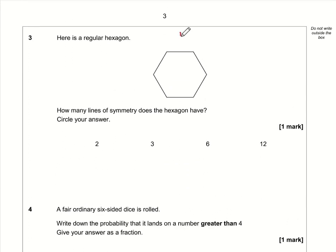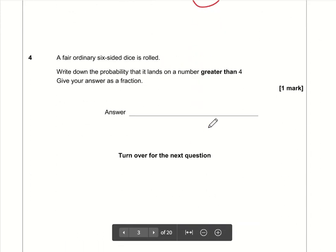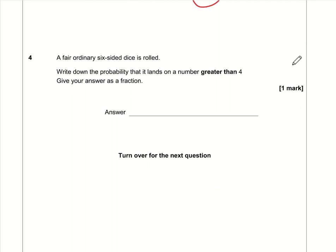There's one line of symmetry right through the middle of those sides, and a similar line through the middle of the opposite sides. There are also lines of symmetry going from corner to opposite corner. So in total that is six lines of symmetry.